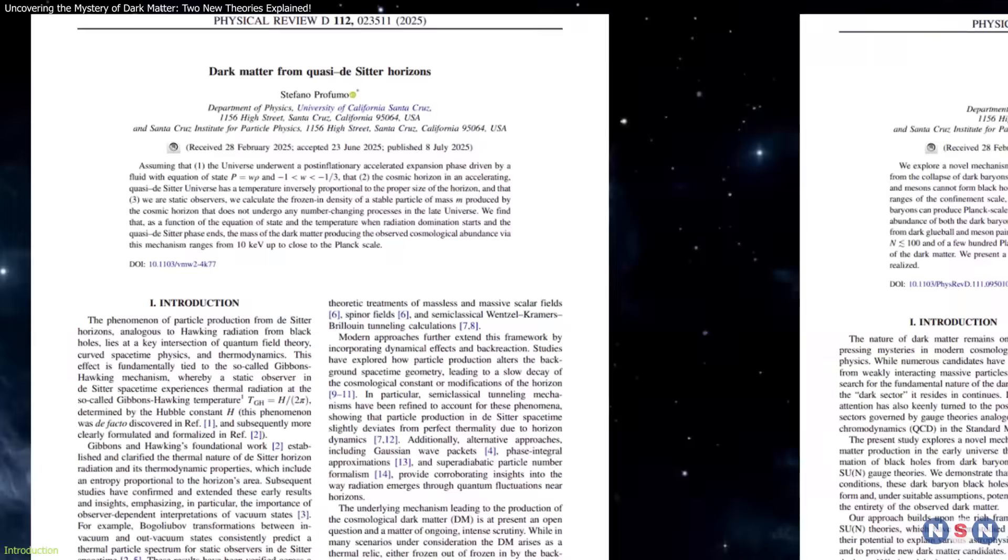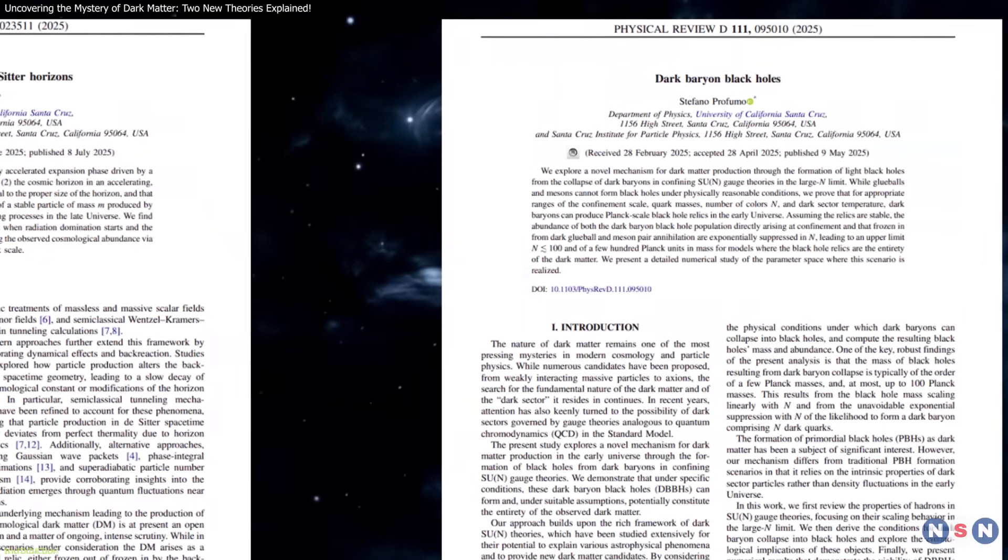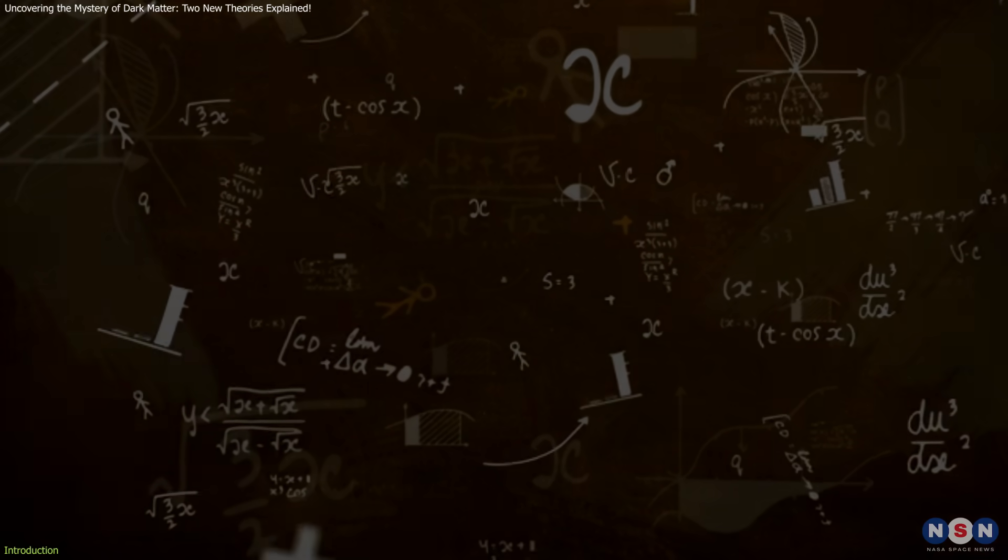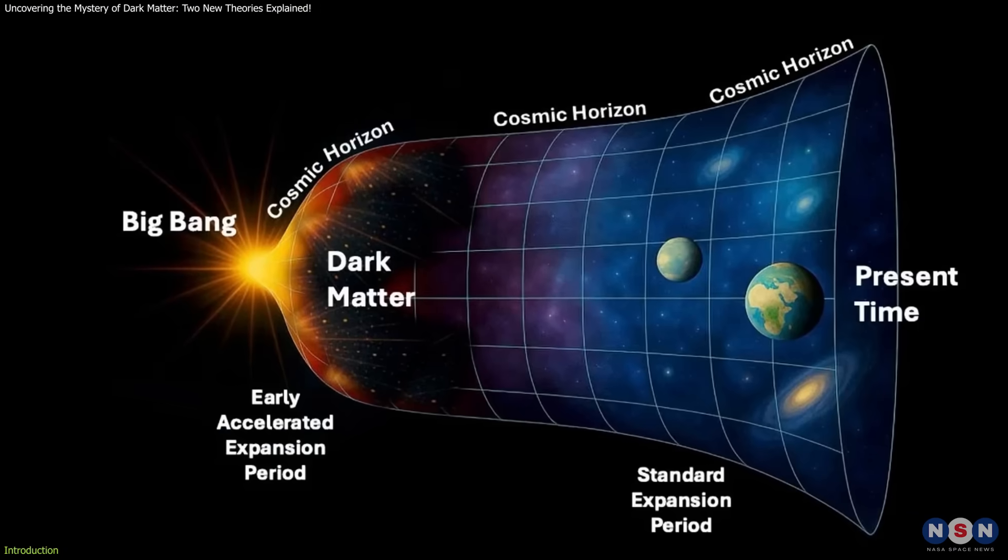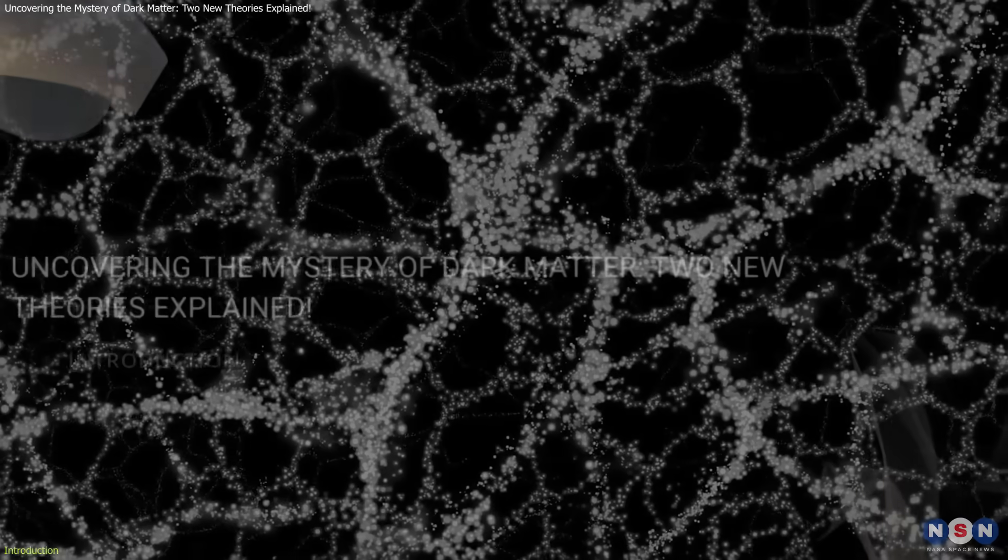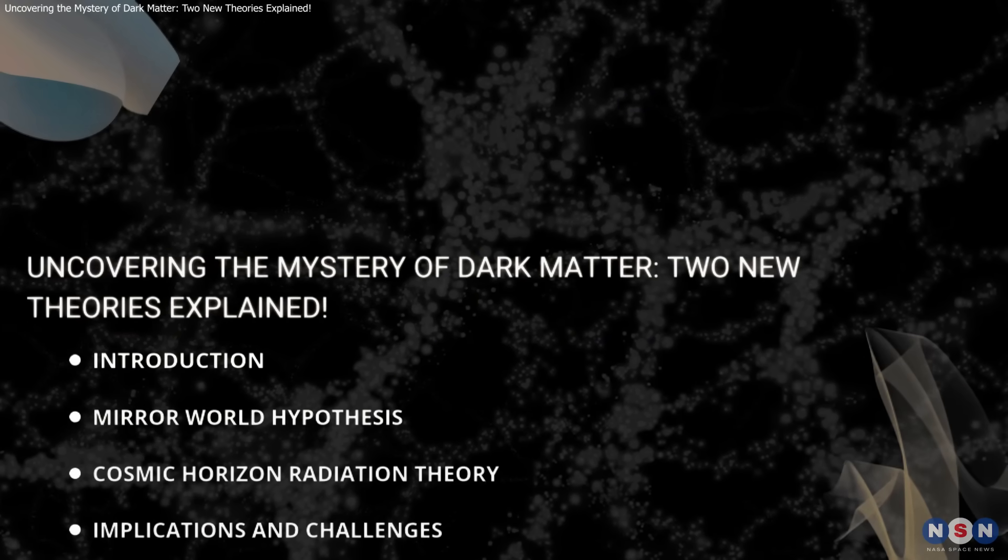Recently, two intriguing theories have emerged, proposing that it could have naturally formed in the early universe. These theories, based on established physics, suggest that it might have emerged from a hidden mirror world or through quantum radiation near the universe's cosmic horizon. In this video, we will explore these theories and their implications for our understanding of dark matter.